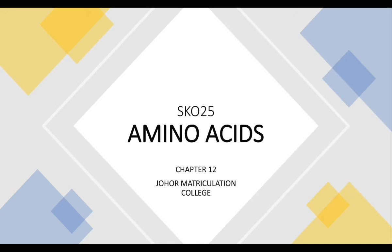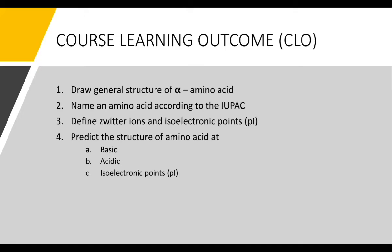Amino acids is a very important organic compound that you need to understand. Under this topic of amino acids, we're going to discover four different CLOs or course learning outcomes. First, I'm going to introduce to you the general structure of amino acid. Next, we're going to learn how to name amino acids according to the IUPAC name. Third, you're going to understand about zwitterions as well as isoelectric points, which is abbreviated as PI. And lastly, we're going to understand or predict the structure of amino acids at different properties of aqueous solution — either in basic, acidic, or at the isoelectric point.